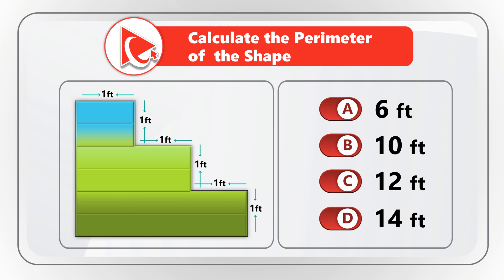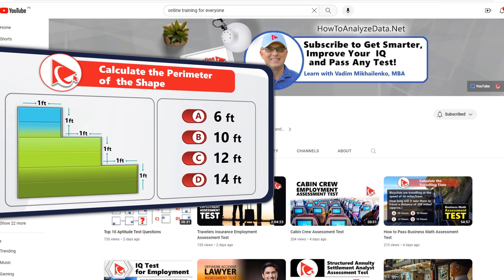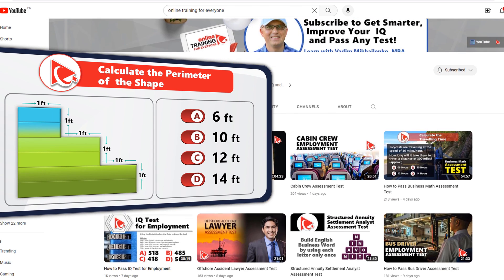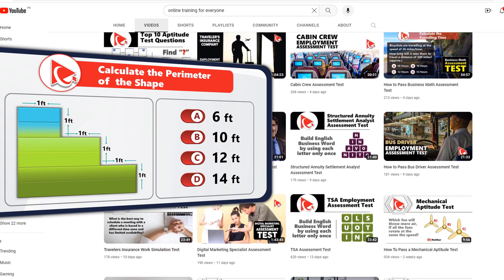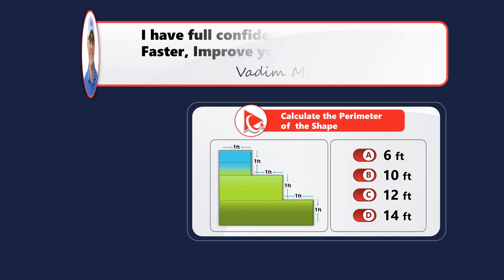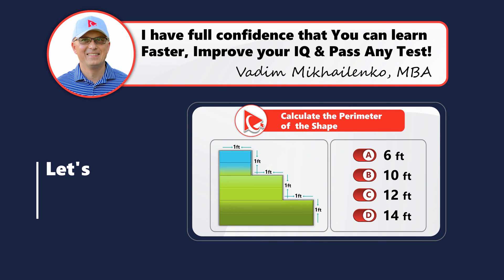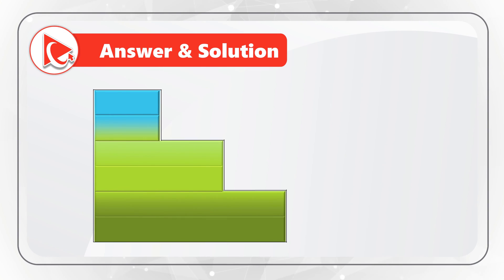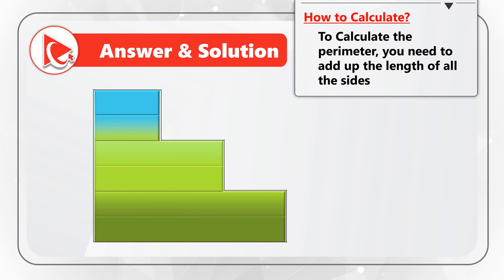Take a close look to see if you can calculate the answer. I'm pretty sure if you are a subscriber and practice these types of problems regularly, you'll do it easily. On my end, I'm moving forward to share with you my version of the answer. As you might be aware, to calculate the perimeter you need to add up the length of all the sides.